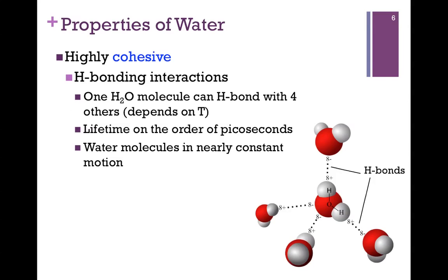One of the interesting properties of water has to do with its ability to form these hydrogen bonding interactions. It means it's highly cohesive. In the illustration here, one water molecule can hydrogen bond with four others. This depends to some degree on temperature. Recall that we have two partial negative dipoles because of those unshared electrons, and two partial positives on those hydrogen atoms, and so each one of those can form a hydrogen bond.